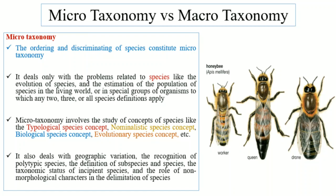Microtaxonomy also covers polytypic species — species in which there are two or more subspecies. It also deals with incipient species, where a parent population is in the process of evolving into another species through changes in their genetic makeup. These incipient species can still reproduce.